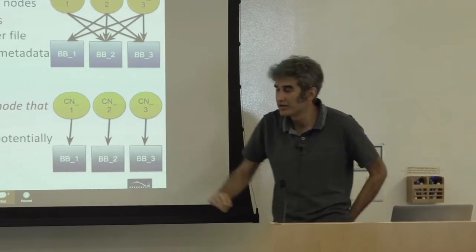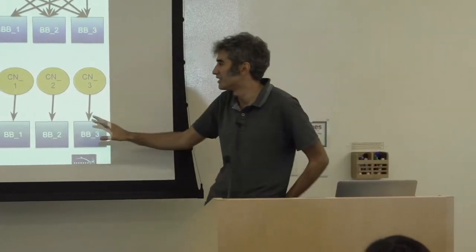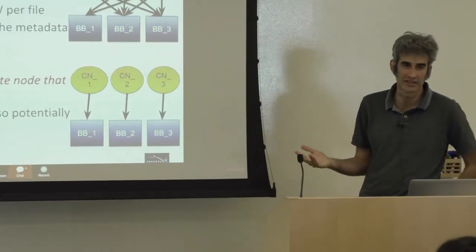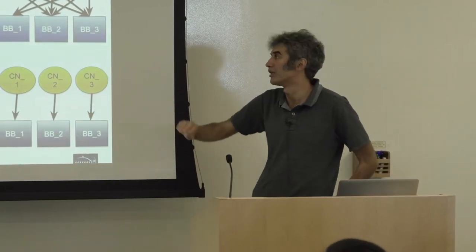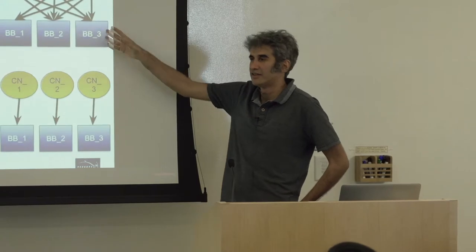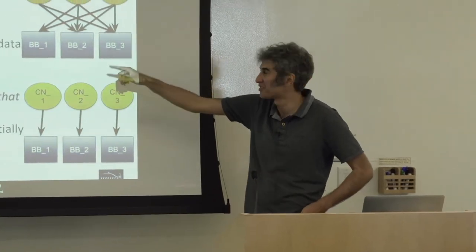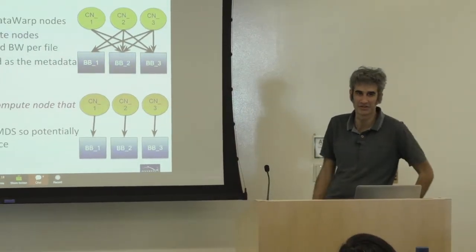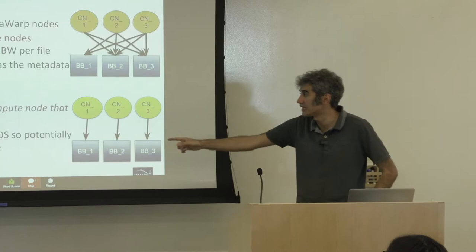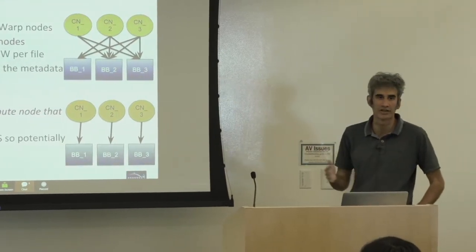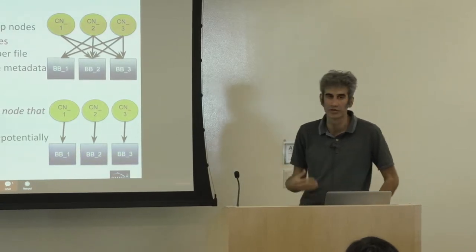Question: if we use shared mode but don't need compute nodes to talk to each other during processing, do we lose performance? The answer is probably not — the only difference is that if you're limited by metadata, private mode is more scalable in that respect. You might think: why not always use striped mode since you have the option of sharing across compute nodes. But we have seen cases where something like an SQLite database with a lot of metadata operations actually benefits from private mode.